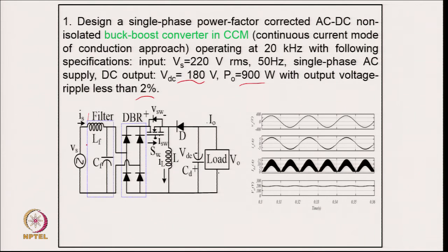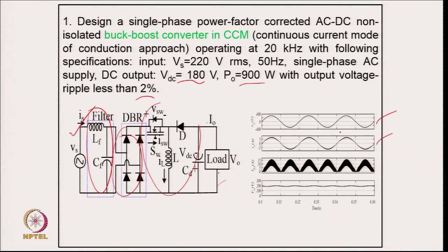This is the typical circuit: we have an EMI filter, then a diode rectifier, followed by the buck-boost converter, which is used for controlling the output voltage as well as providing sinusoidal unity power factor current at the supply. After designing and developing the model, the typical waveforms show the supply voltage and supply current exactly in phase, and the supply current is close to sinusoidal.